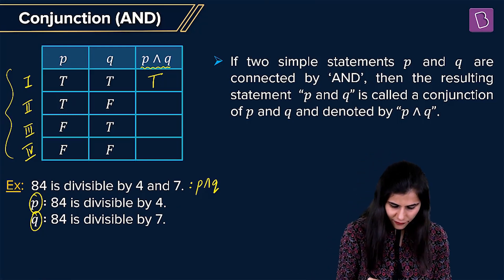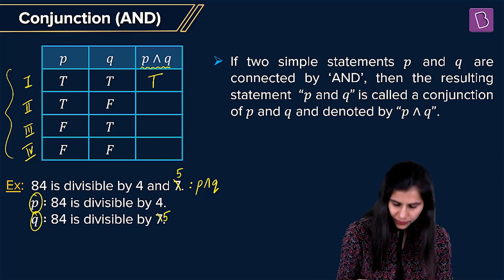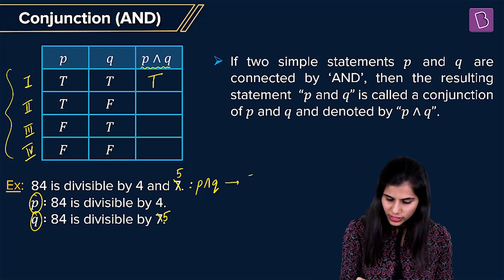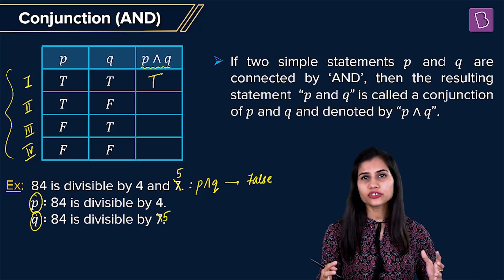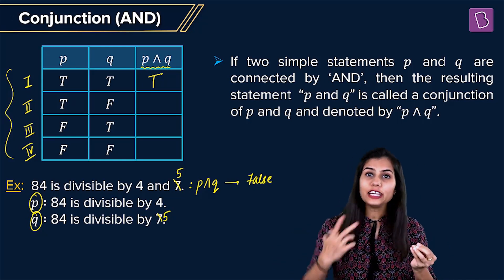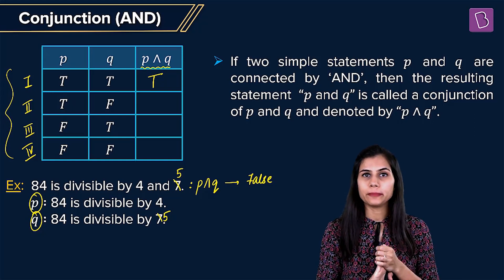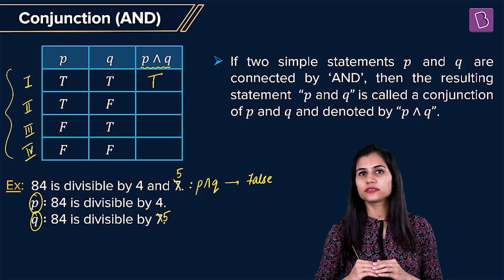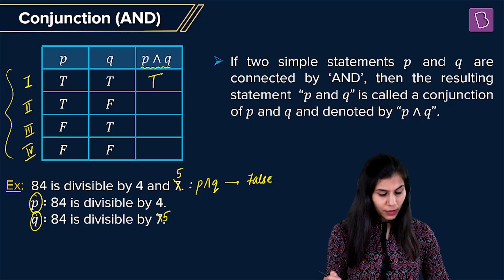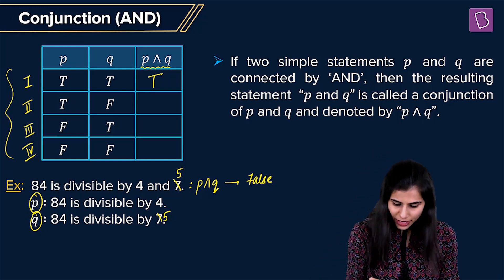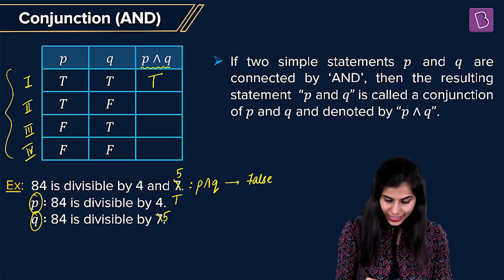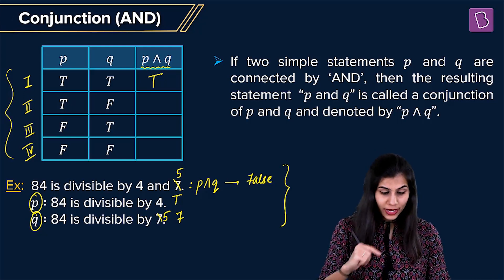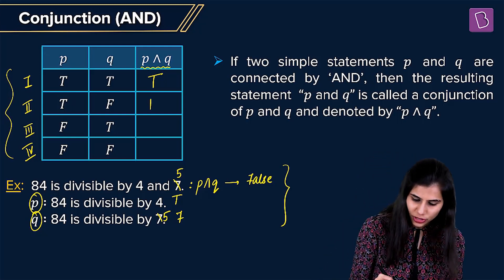Let's say in place of 7 we put 5: '84 is divisible by 4 and 5.' This is obviously false, because the statement claims both 4 and 5 divide 84 completely — that's not true. So the conjunction statement has truth value: false. For individual statements: '84 is divisible by 4' is true, but '84 is divisible by 5' is false. The inference: when P is true and Q is false, P ∧ Q comes out to be false.